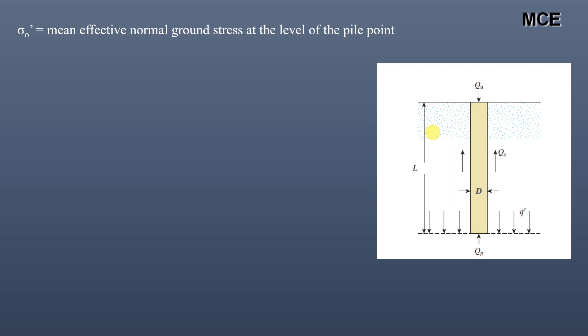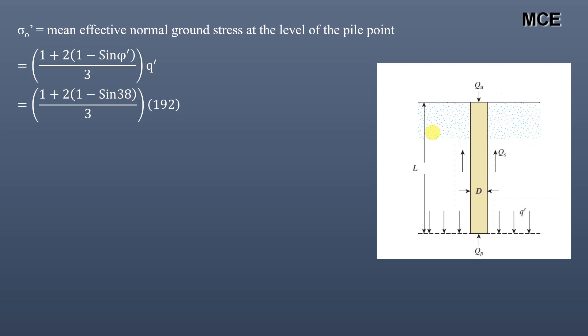σ' is the mean effective normal stress at the level of the pile point, given as σ' = [(1 + 2(1 − sin φ')) / 3] × q'. Substituting the values of φ' = 38° and q' = 192 kPa, we get σ' = 113.2 kPa.